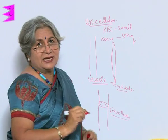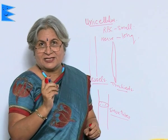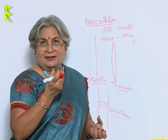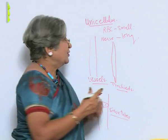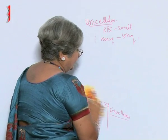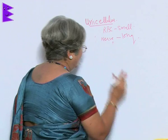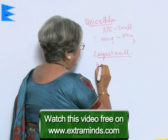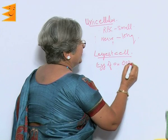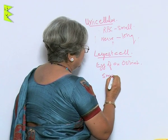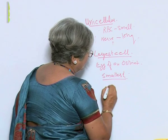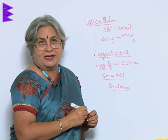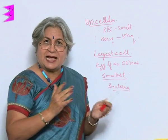Nerve cells are quite long. But the point is, what is the largest cell? The largest cell is the egg of an ostrich — the egg is also just one cell, and the largest egg is that of an ostrich. The smallest cell would be that of bacteria; a special type of bacteria is there which is very very small. So like this, even the size is not the same.